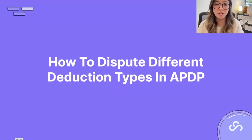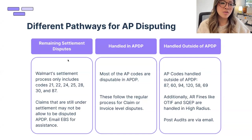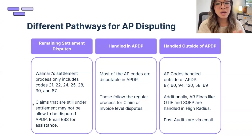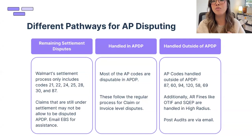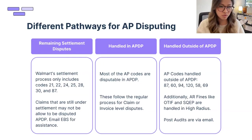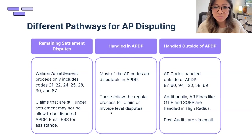Now let's get into the tactical part: how you actually dispute different deduction types in APDP. There are three main pathways. First, remaining settlement disputes — if you have claims that still fall within the quarters covered by settlement, you cannot dispute them in APDP. For example, if your last settlement quarter was Q4 2022, a shortage claim from November 2022 must still go through settlement. You'll email EBS for guidance on those.